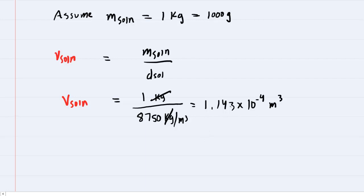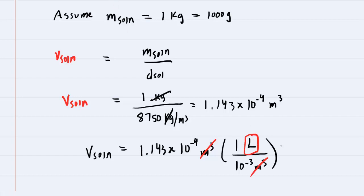It will be convenient to convert the volume of the solution into liters rather than meters cubed. We recall that one liter is 10 to the minus 3 meters cubed. Setting it up this way, the meters cubed cancel and we get a volume of 0.114 liters.